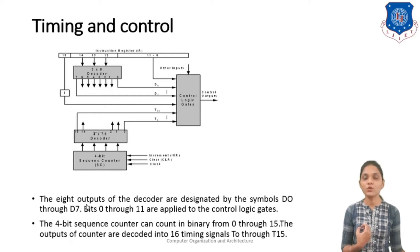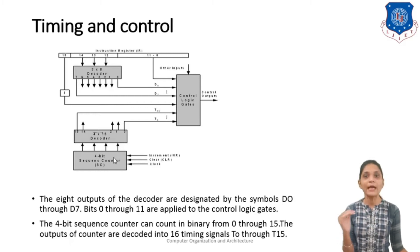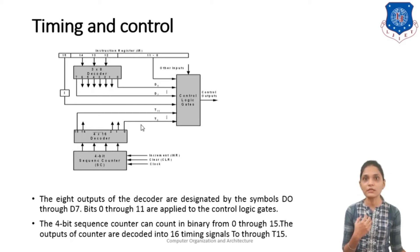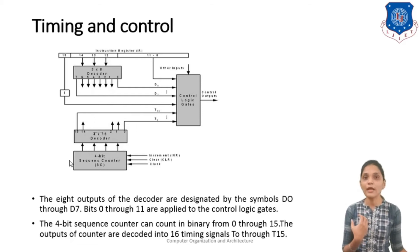The 4-bit sequence counter can count from 0 to 15, because it can count from 0000 to 1111. Depending upon that, you can generate a total of 16 output lines, because the sequence counter's output is given to the 4x16 decoder. So if it is 0000 then signal T0 will be generated, if it is 0100 then T1, if it is 1100 then T2, T3, and so on. So any one timing signal is generated from here.